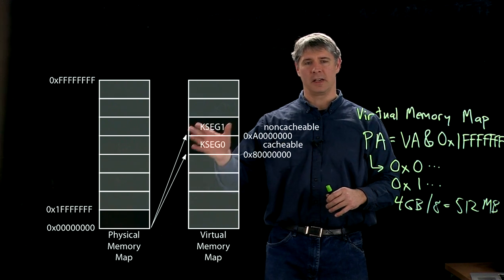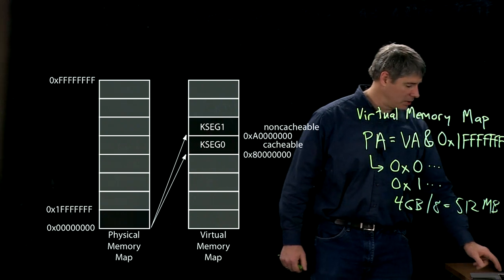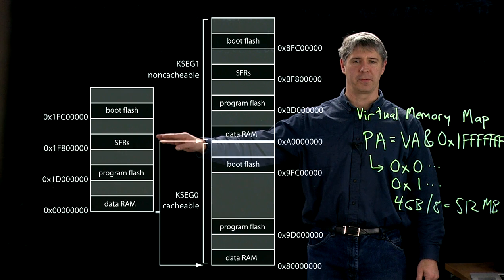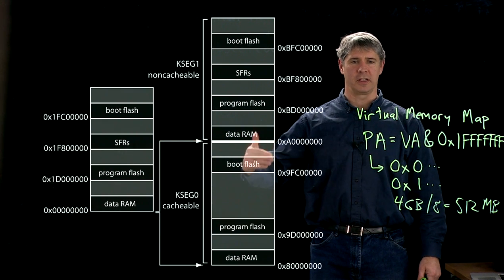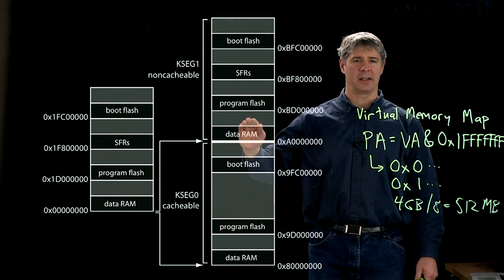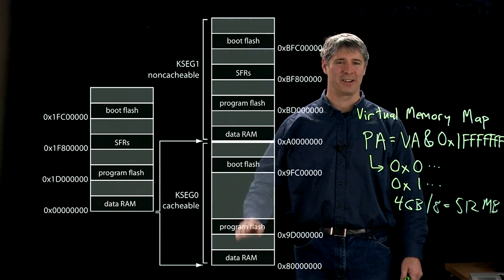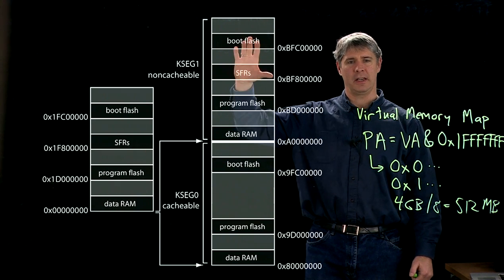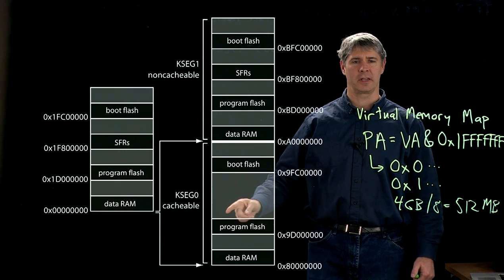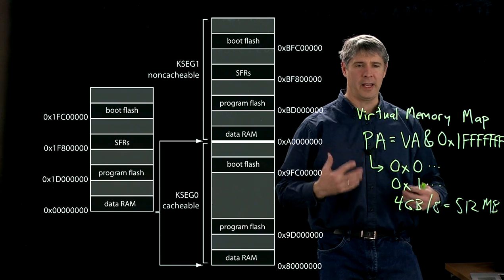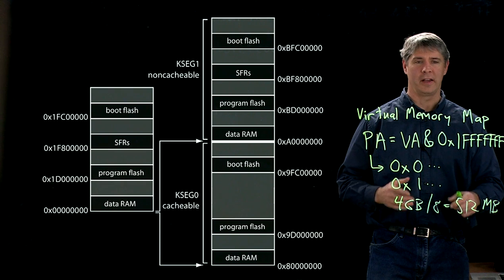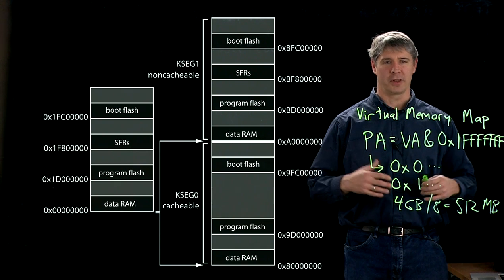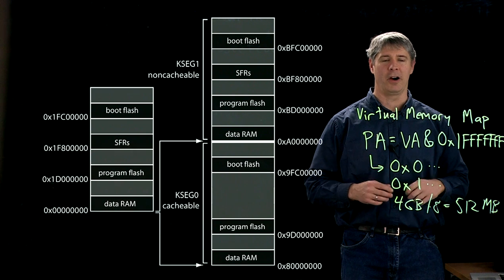Zooming in on this mapping more closely, here's our physical memory map with RAM, flash, special function registers, and boot flash. It maps over to the cacheable segment kseg0, as well as the non-cacheable segment kseg1. You can see copies of all segments in kseg1, but down in kseg0 there's no SFR segment. The reason is that you can't cache the special function registers — they correspond to hardware on the PIC, such as the current inputs at a digital input port, so that value can't be cached.